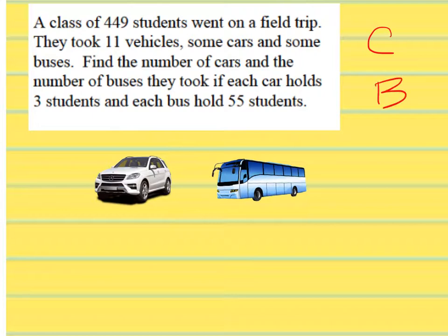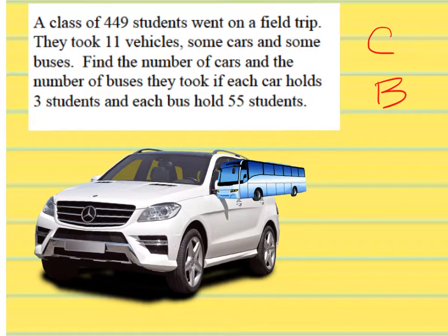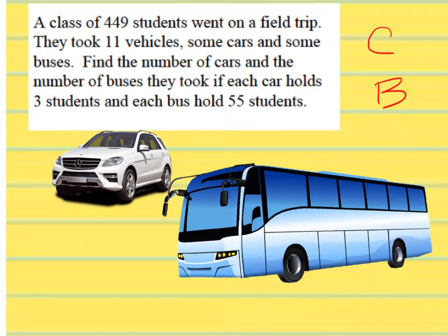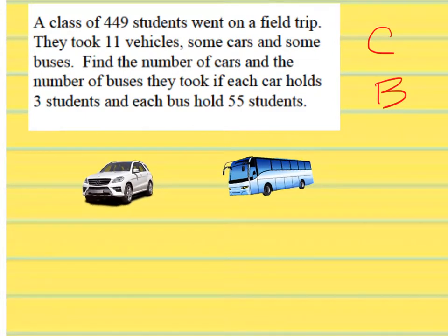We have 449 students total and they took 11 vehicles. So we know that if I add the number of cars and the number of buses, what should it equal? 11. So if I add these two together I am going to come up with 11. So I am adding cars and buses: C plus B equals 11.